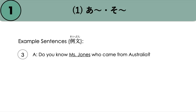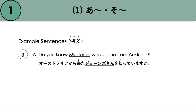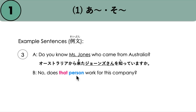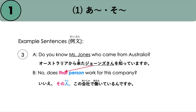Another example: 'Do you know Miss Jones who came from Australia?' — Osutoraria kara kita Johnson-san o shitte imasu ka? B says 'No. Does that person work for this company?' Since the other person doesn't know Miss Jones, we use the prefix So: sono hito. Iie, sono hito wa kono kaisha de hataraite iru n desu ka?